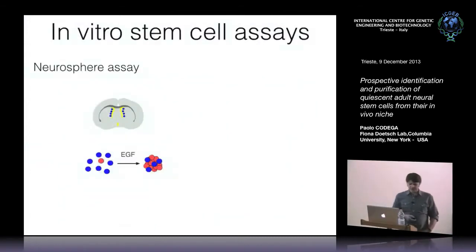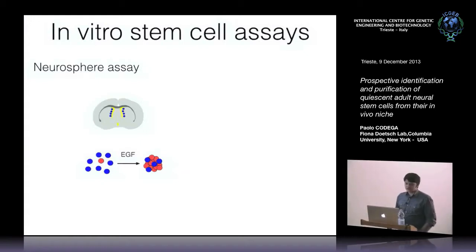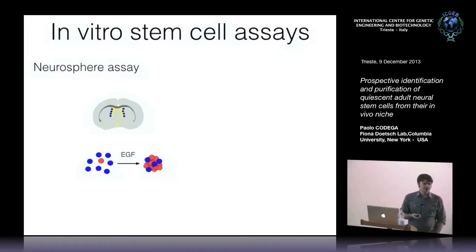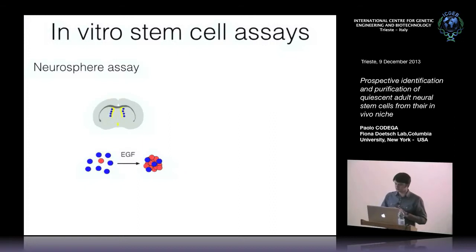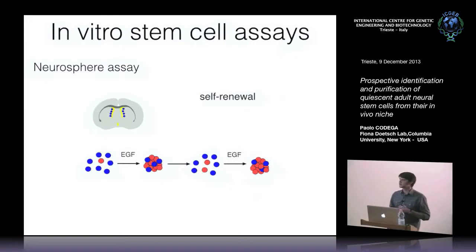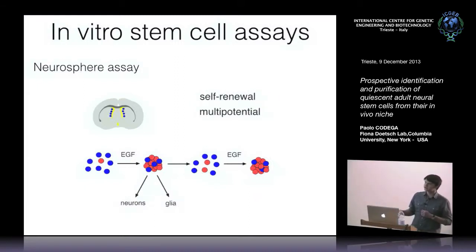We also tested in vitro stem cell potential using the neurosphere assay, in which cells isolated from the SVZ are dissociated and plated in non-adherent conditions with EGF. Cells with stem cell capabilities grow and form spheres called neurospheres. We can then dissociate and re-passage the spheres to assess self-renewal, or plate them in differentiating conditions to check if they give rise to cells of the lineage.